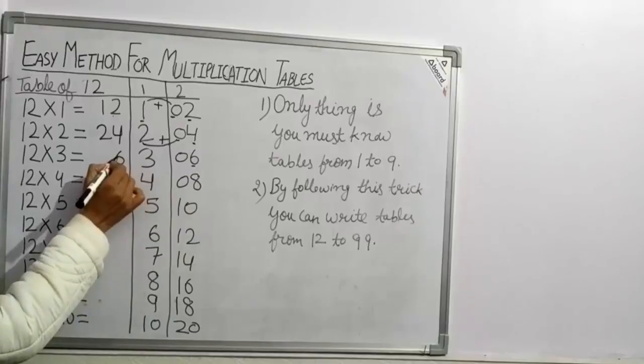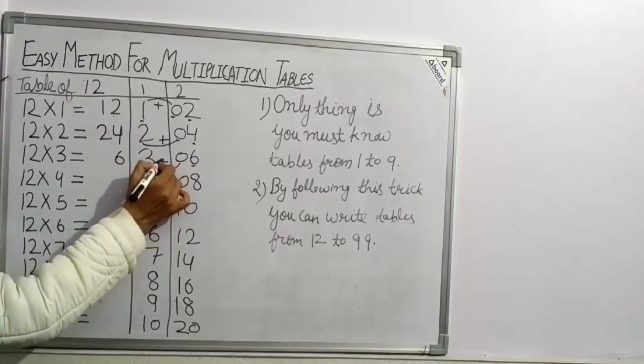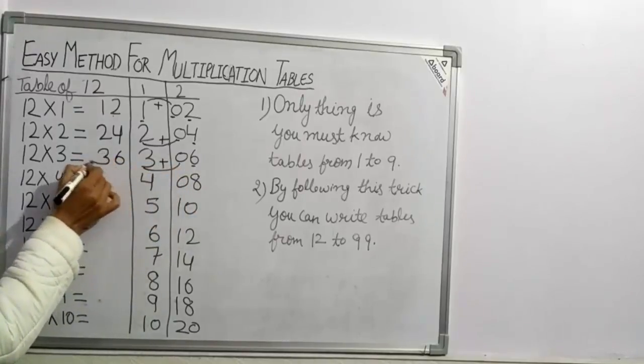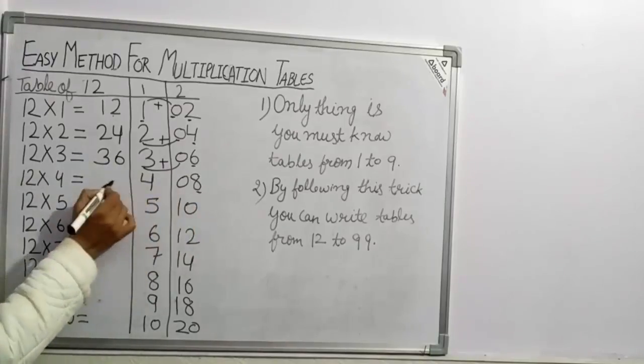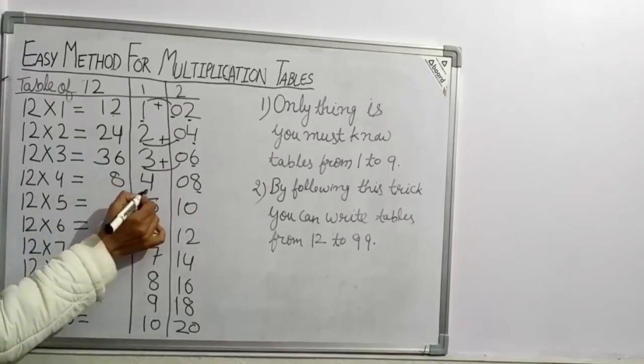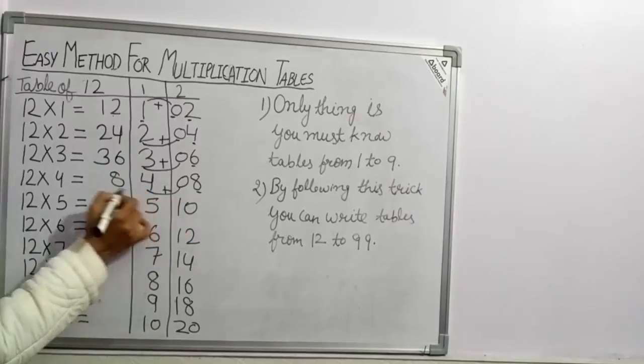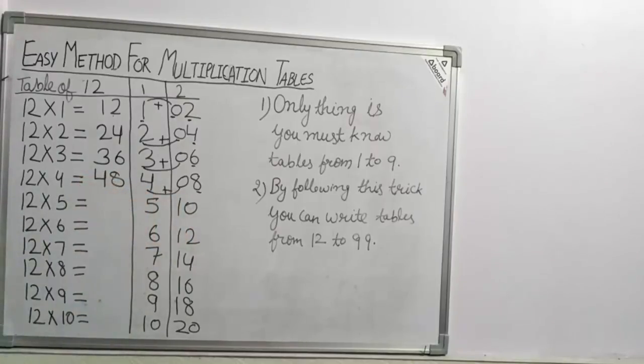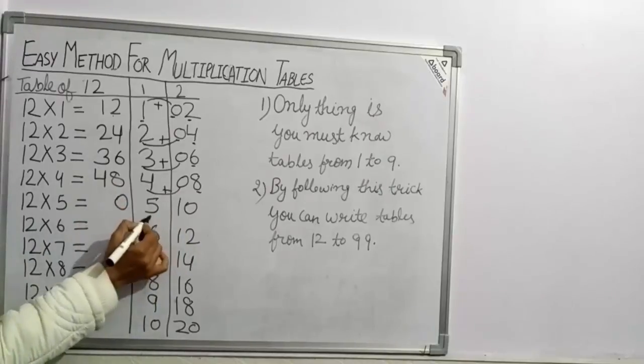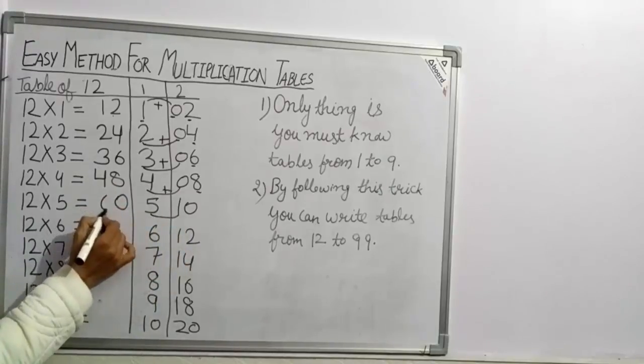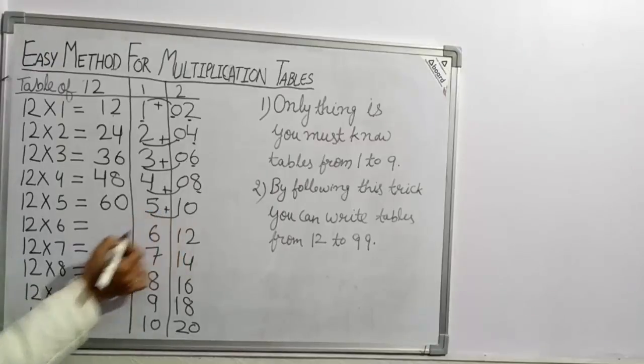6 as it is, 3 plus 0, 3. 12×3 = 36. 8 as it is, 4 plus 0, 4. 12×4 = 48. 0, 5 plus 1, 6. 12×5 = 60.